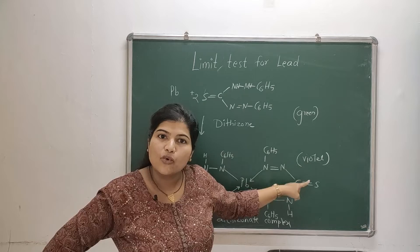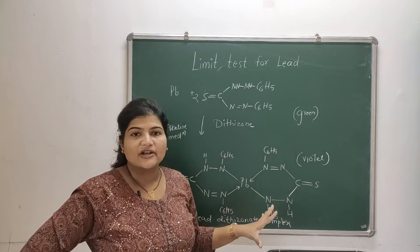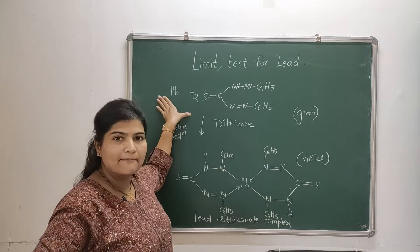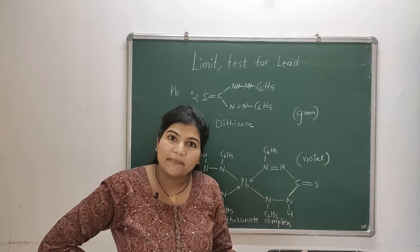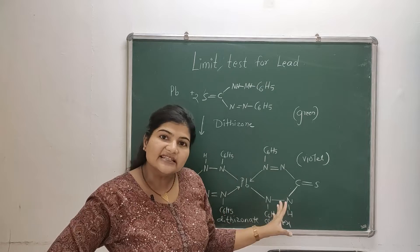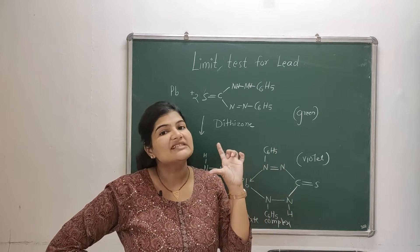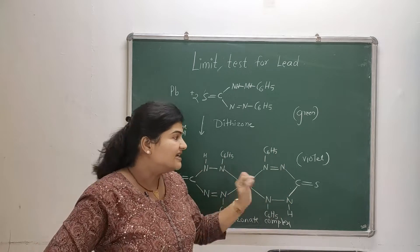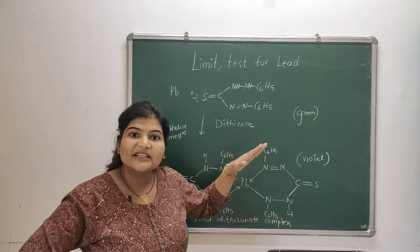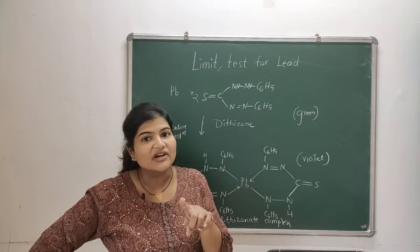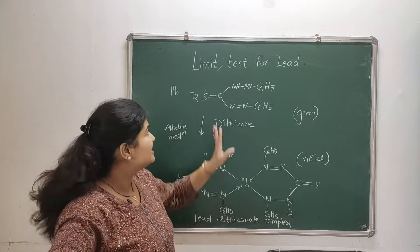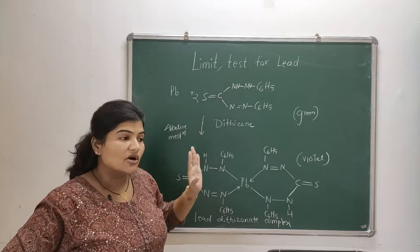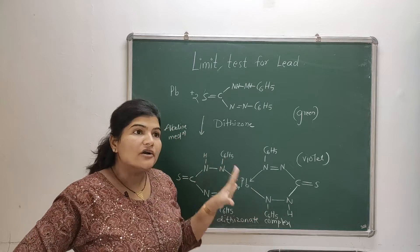So once it changes the color to violet, now what we are going to do is - this is our sample solution, we have got some intensity of violet color. That we are going to compare with the intensity of violet color obtained in our standard solution. If the intensity obtained in our sample is less than the standard one, we can surely say that our sample passes the limit test for lead.